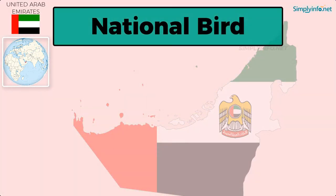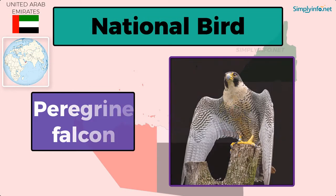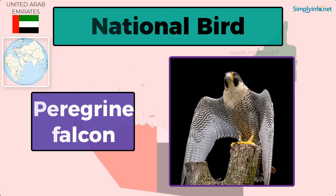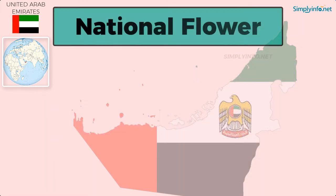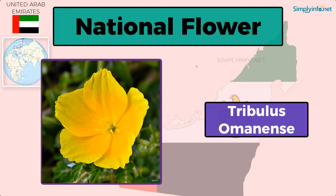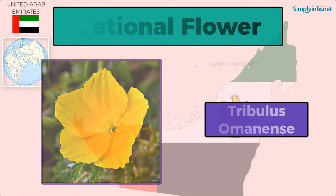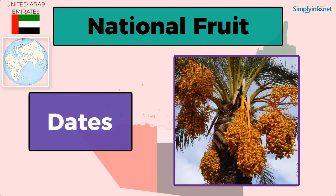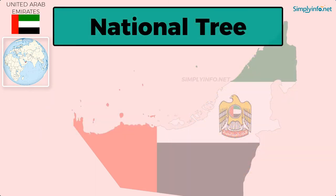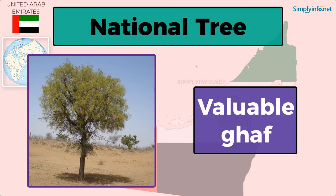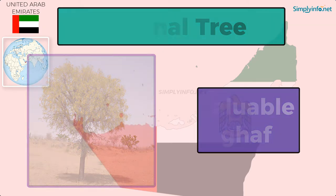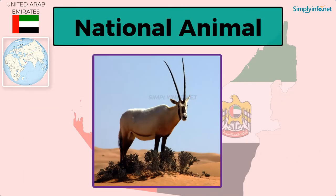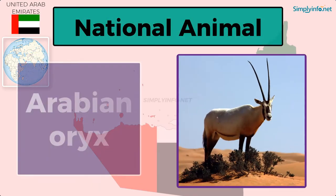National bird: Peregrine Falcon. National flower: Tribulus. National fruit: Dates. National tree: Ghaf tree. National animal: Arabian Oryx.